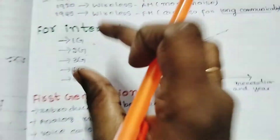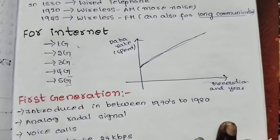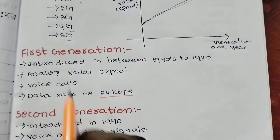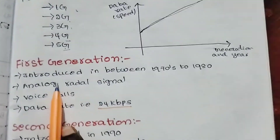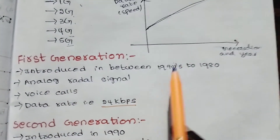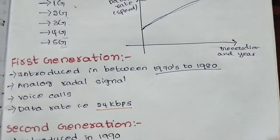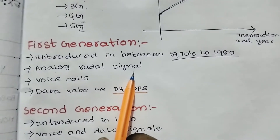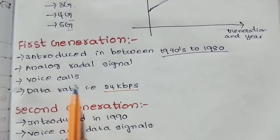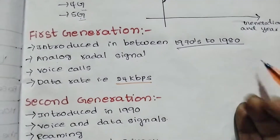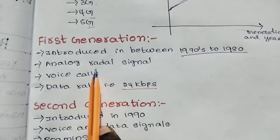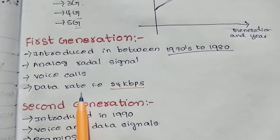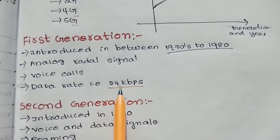Now we will discuss these five generations and their evolution. The first generation, 1G, was introduced in the 1970s to 1980s. It used analog radio signals and was only for voice calls — only voice transmission was available. The data rate was 2.4 Kbps.